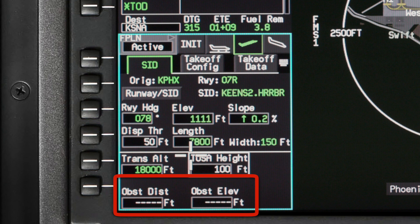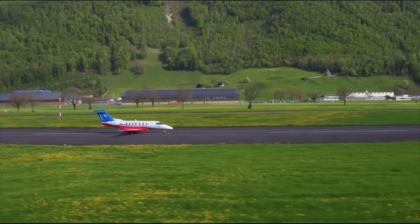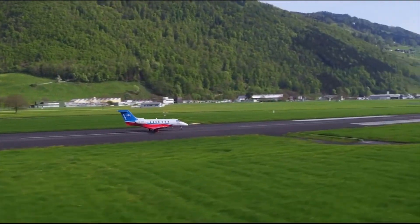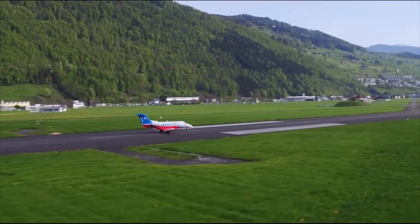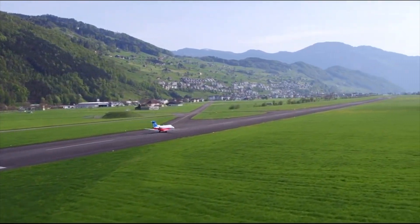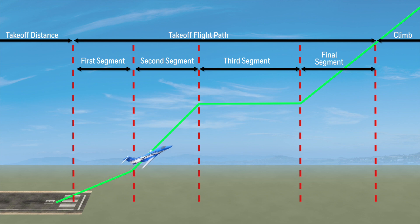The TOLD feature has an obstacle clearance function which is a simplified obstacle clearance calculation that determines whether or not an obstacle can be cleared from the point of brake release until flap retraction is complete. For multi-engine aircraft, it takes into account the takeoff distance and the single-engine climb gradients for the first and second segments.